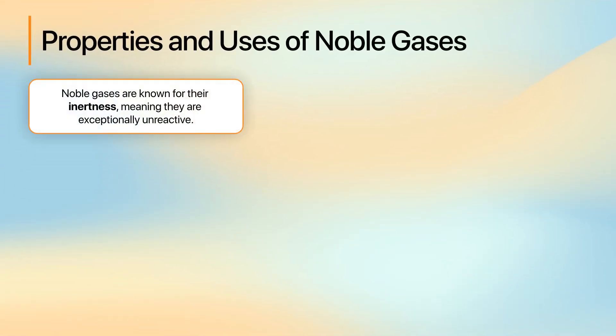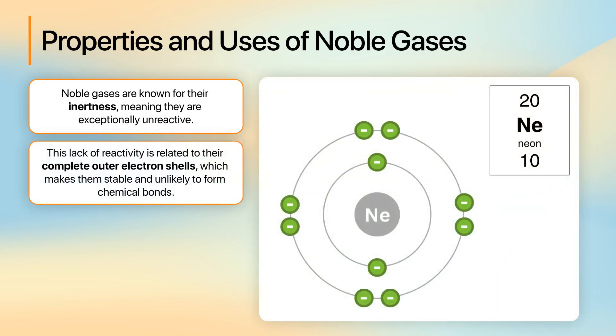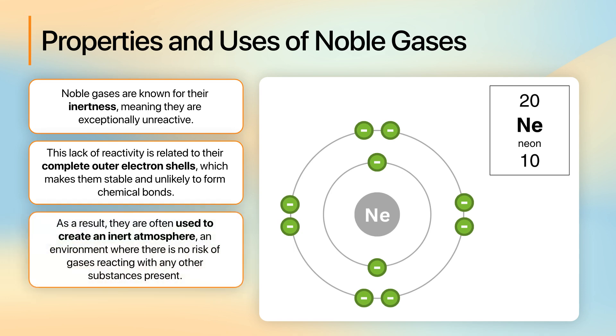Noble gases are known for their inertness, meaning they are exceptionally unreactive. This lack of reactivity is related to their complete outer electron shells, which makes them stable and unlikely to form chemical bonds. As a result, they are often used to create an inert atmosphere, an environment where there is no risk of gases reacting with any other substances present.